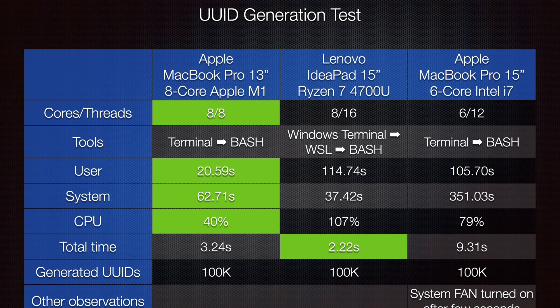The AMD Ryzen 7 4700U processed it in 2.22 seconds because it has eight cores and 16 threads. However, AMD Ryzen took 107% CPU time — that was the highest among these three processors. The Intel i7-based MacBook Pro took 9.31 seconds, and the system fan was constantly on during that test.